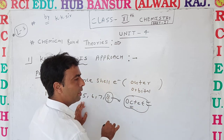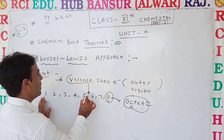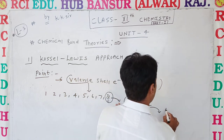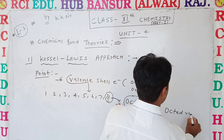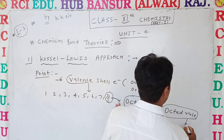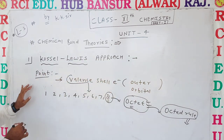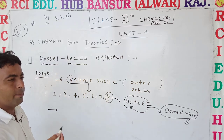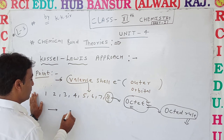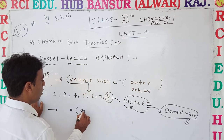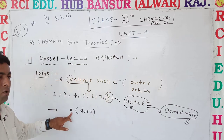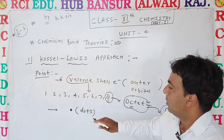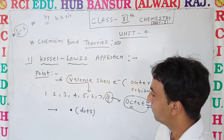Valence electrons depend on the octet. The octet gives us a concept called the octet rule. We will see the octet rule in detail later. According to Lewis, electrons are represented by a sign called dots. The dots represent the electrons around an atom according to Lewis's notation.